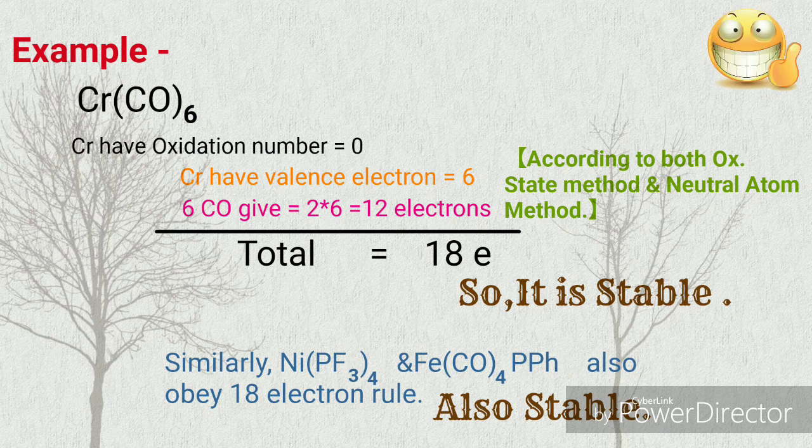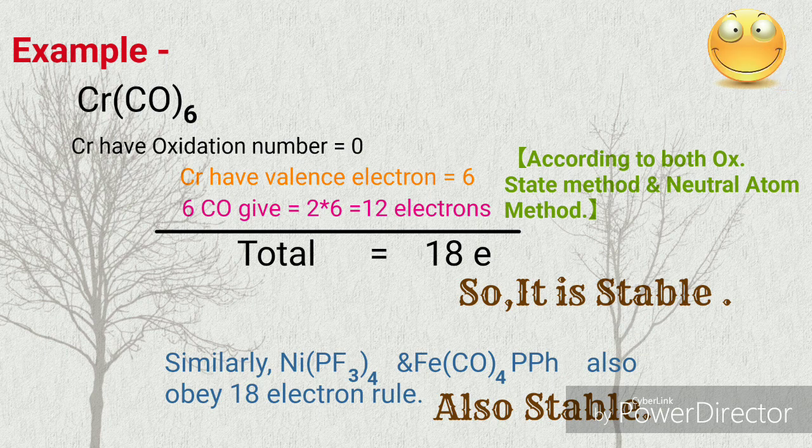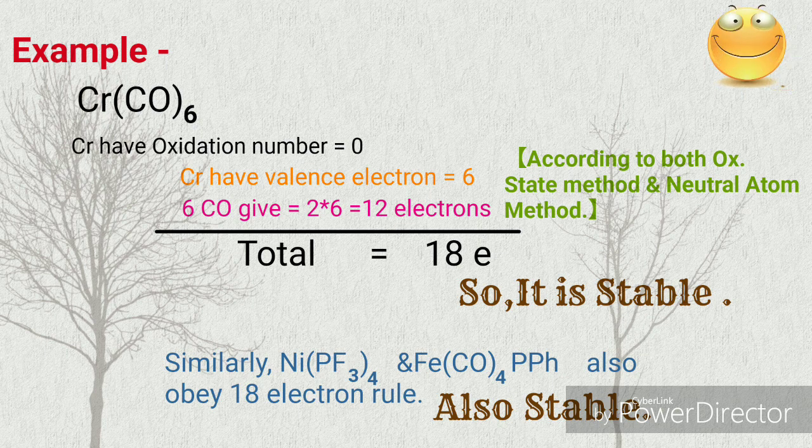So Cr(CO)₆ is stable. Similarly, Ni(PF₃)₄ and Fe(CO)₄PPh also are stable and obey the 18 electron rule.